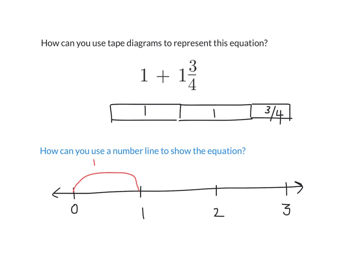I can show that 1 plus 1 and 3 fourths is like this. It starts at 0. Here's 1, right? I move to here to get to 1. And then I have another 1 here. And then for 3 fourths, I have to split the distance between 2 and 3 into fourths. And here's 1 fourth, 2 fourths, 3 fourths.